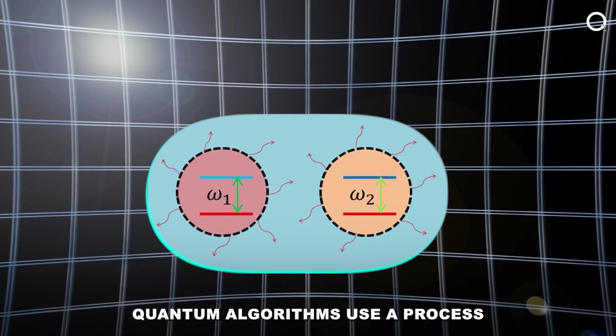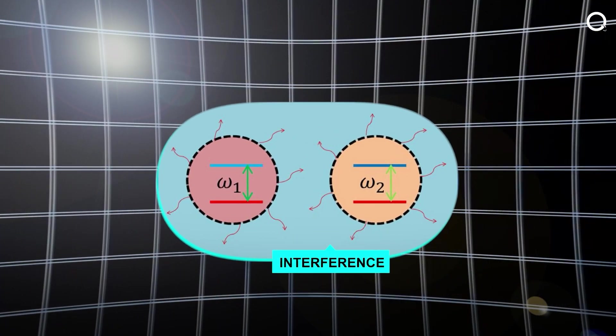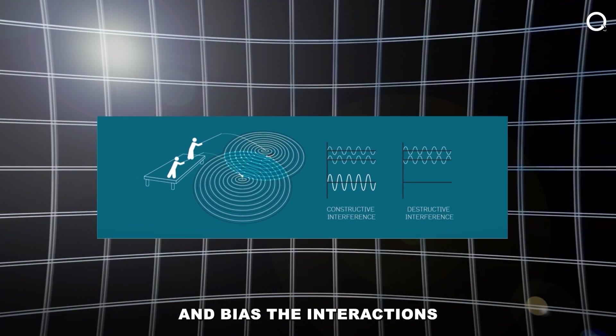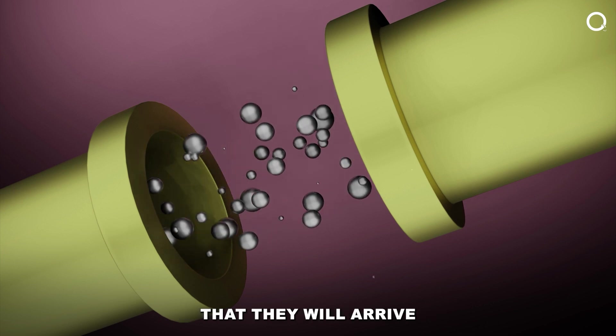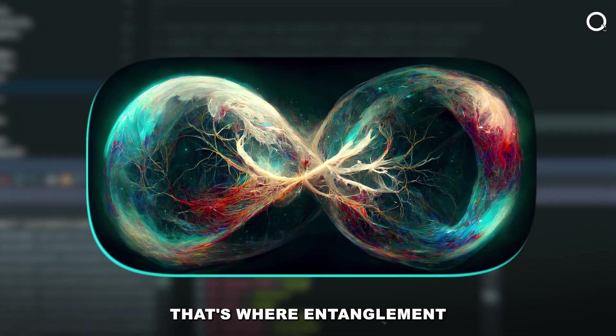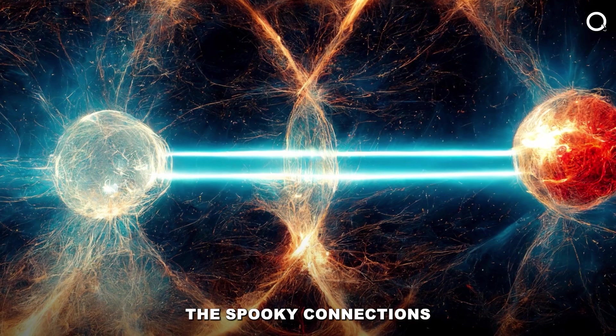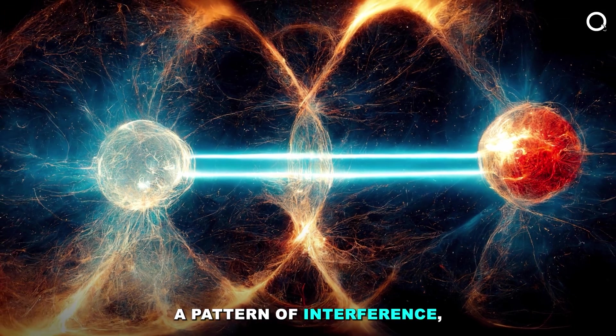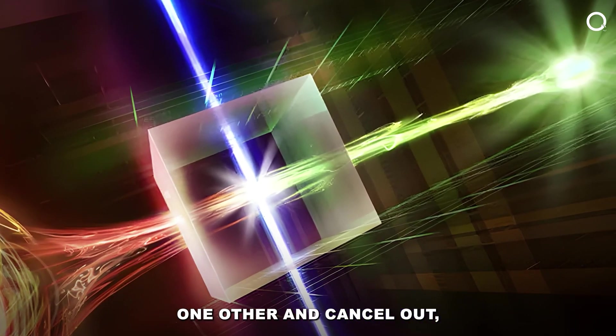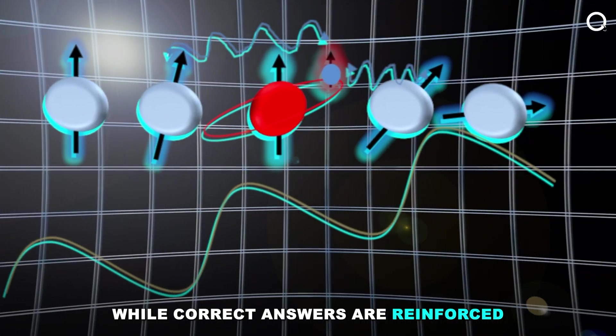Quantum algorithms use a process known as interference to skew those unknown features and bias the interactions of numerous qubits, increasing the possibility that they will arrive at a final state containing a solution to the problem they are attempting to solve. That's where entanglement comes into play. The spooky connections between qubits create a pattern of interference, where bad answers destroy one other and cancel out, while correct answers are reinforced.